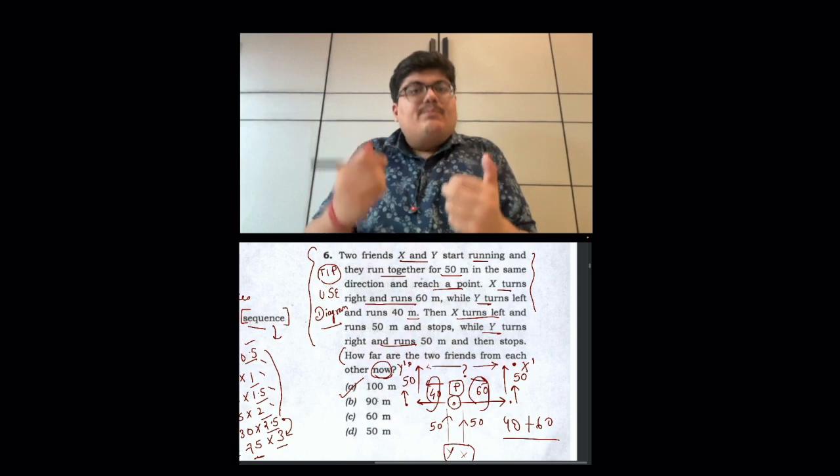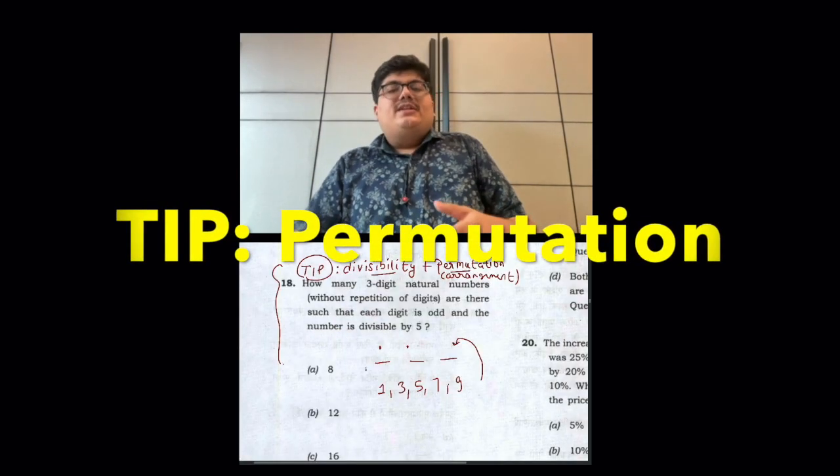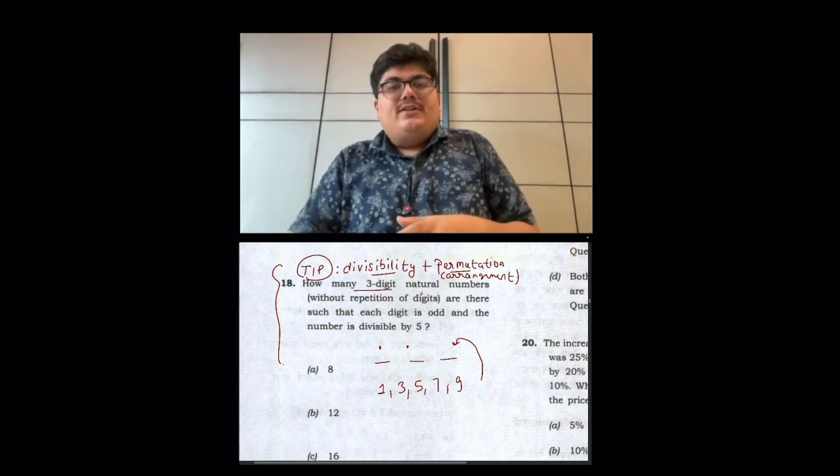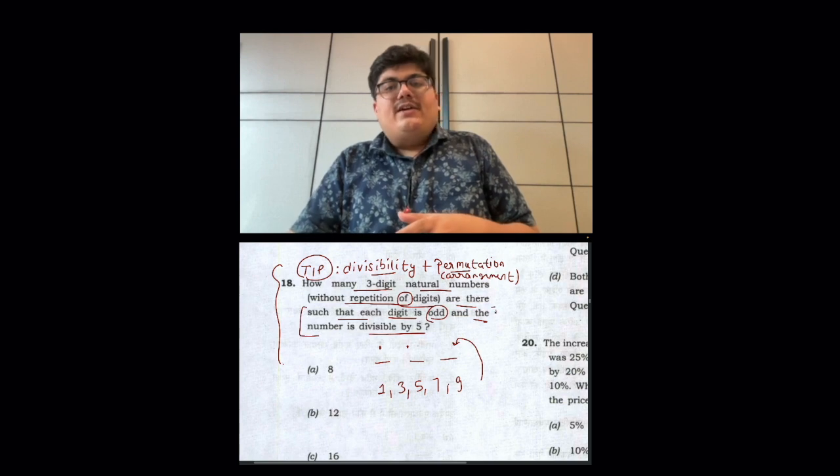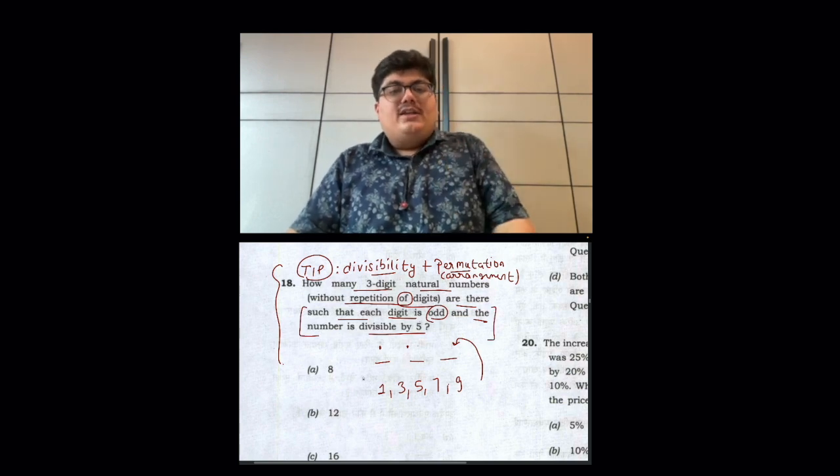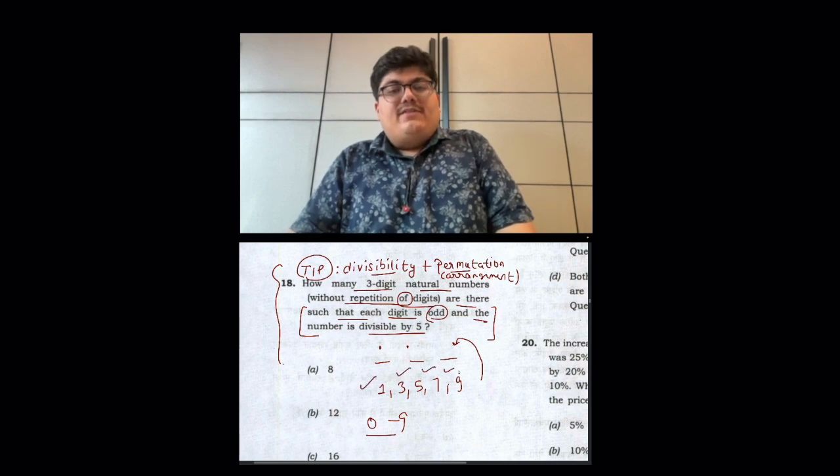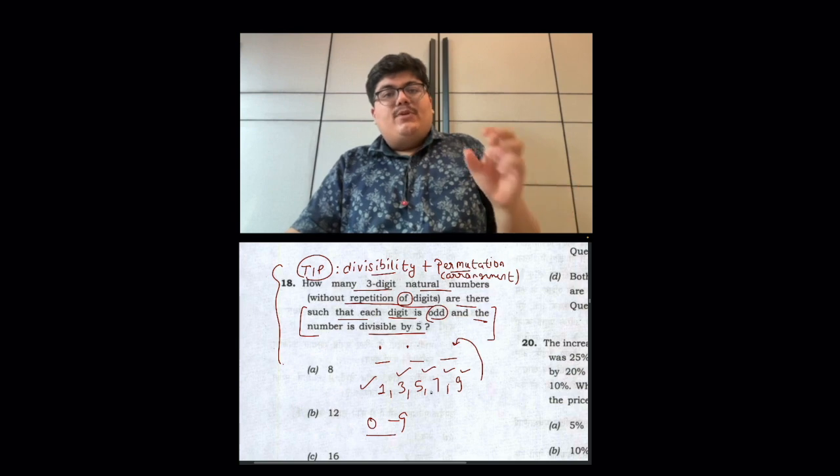Now let's look at the last question. In this question, the tip is divisibility and permutation. Permutation is basic. We are talking about arrangement. What is our question? How many three-digit natural numbers without repetition of digits are there such that each digit is odd and the number is divisible by 5? Because this is a critical condition. Each digit is odd. What are the digits? 0 to 9. Now which is odd digit? 1, 3, 5, 7, 9. In odd digits, without repetition, we have to make a three-digit natural number.